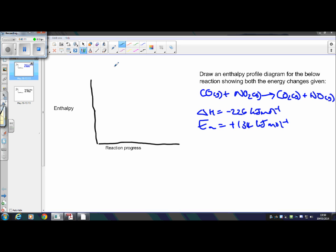So drawing an enthalpy profile diagram below for the reaction showing both energy changes given. So here your delta H is negative 226 and it's also showing your activation energy. So straight away you should look at this value, your delta H value.